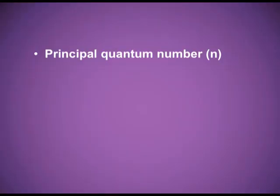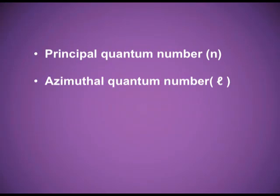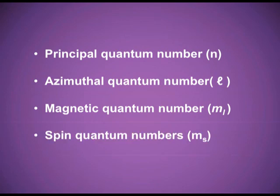The first one is the principal quantum number, the second is the azimuthal quantum number, the third is the magnetic quantum number, and the fourth is the spin quantum number. The first three explain about the orbital and the electron both, but the spin quantum number is only for the electrons, because electrons are the ones spinning in the orbital.